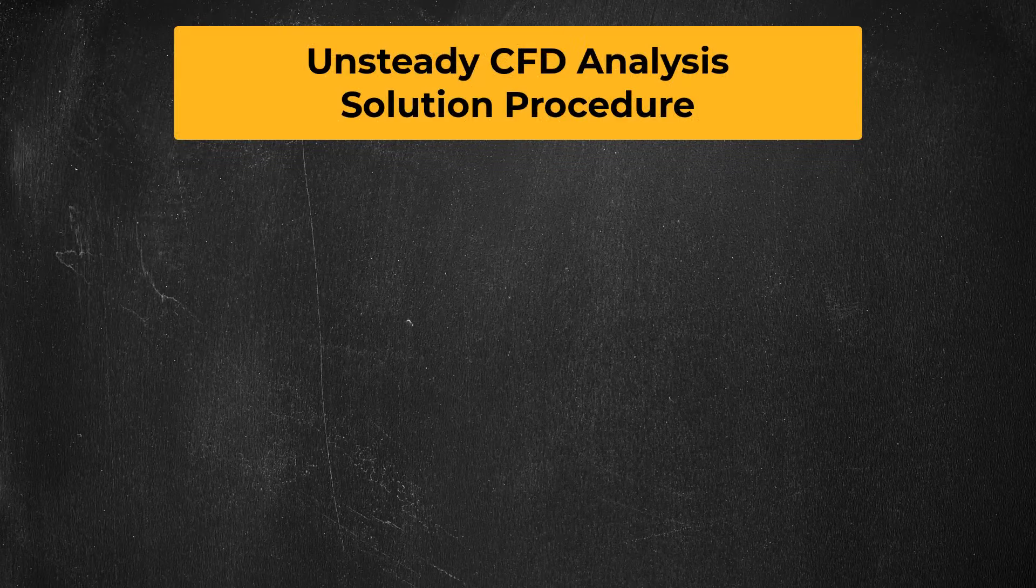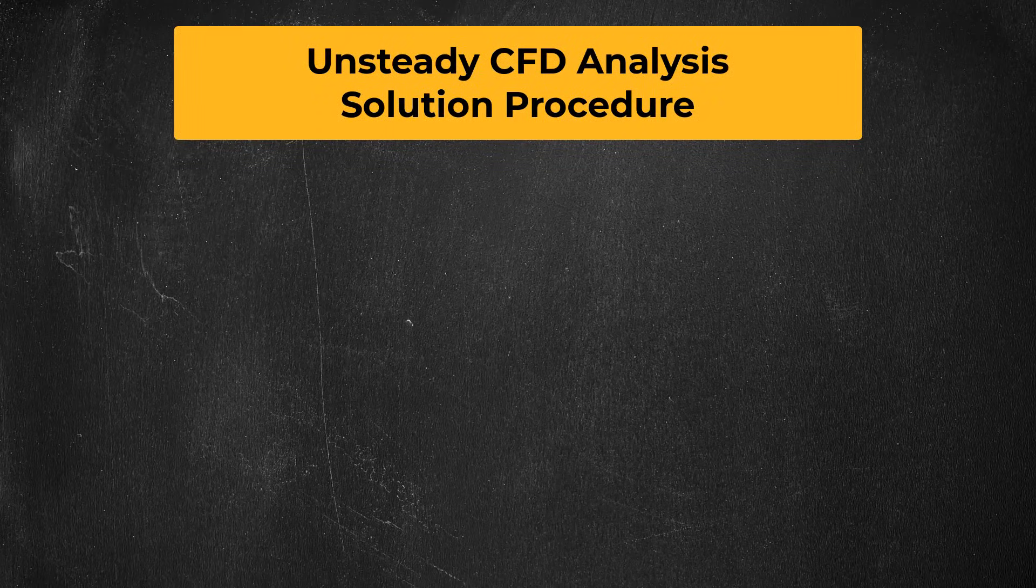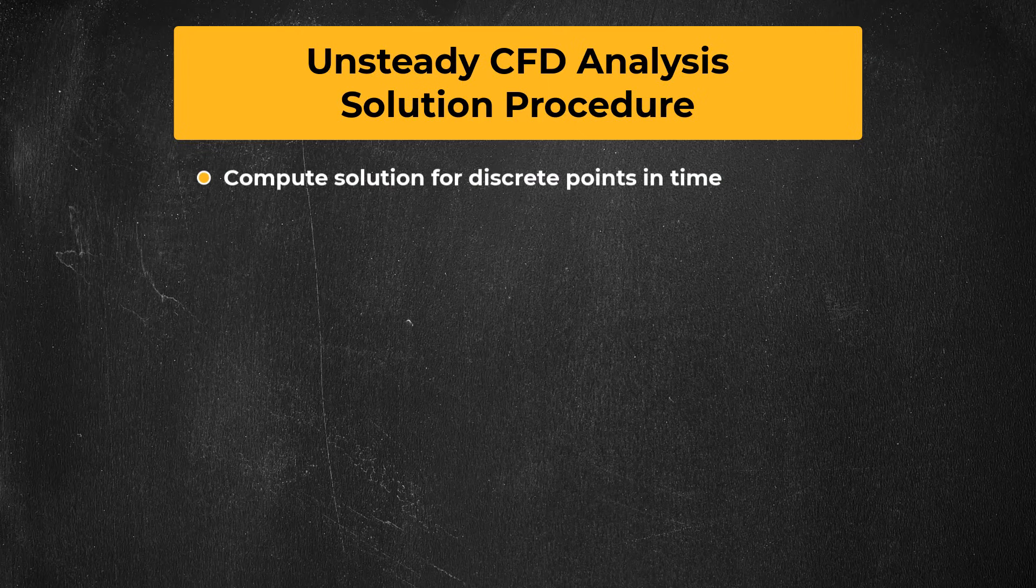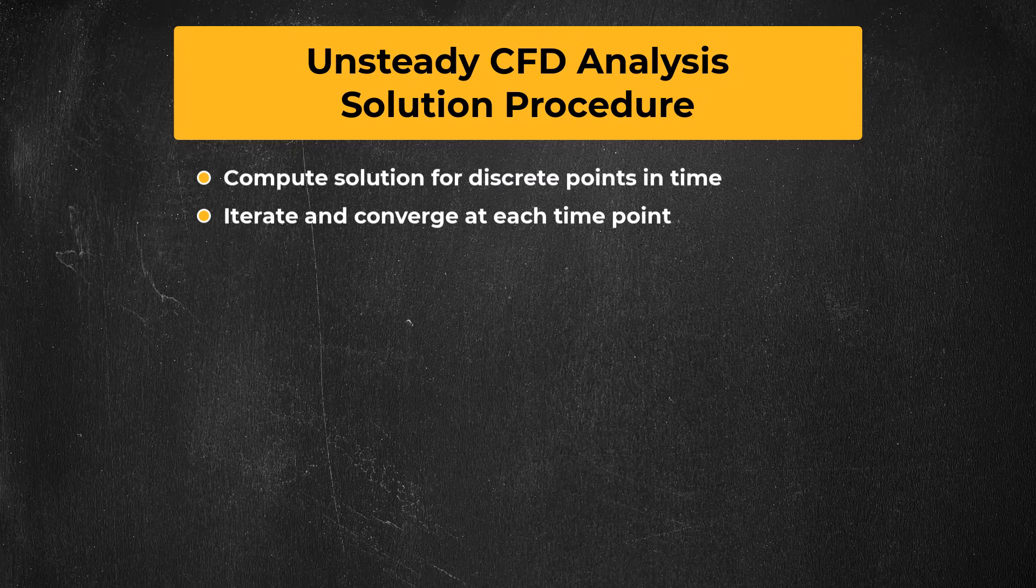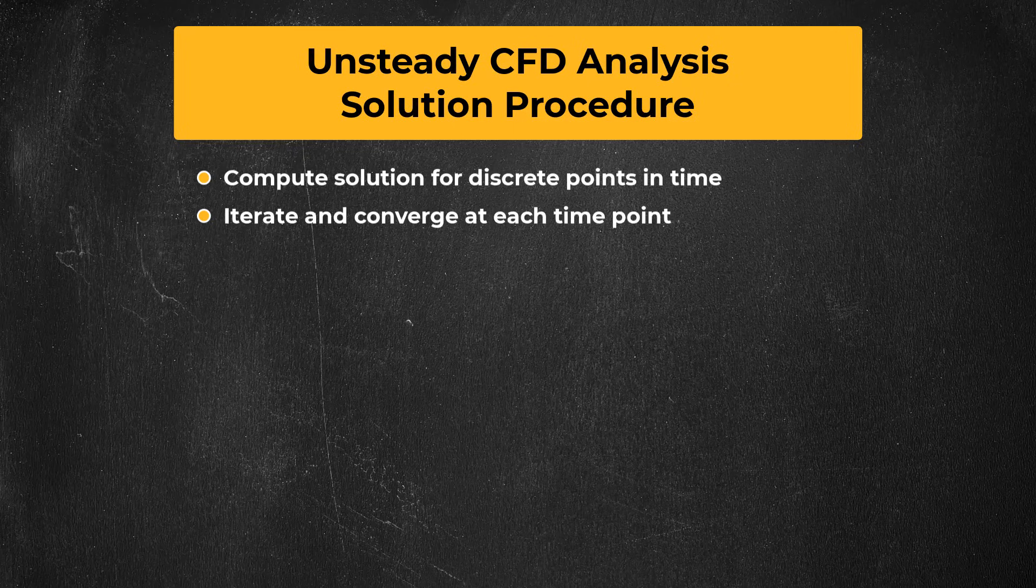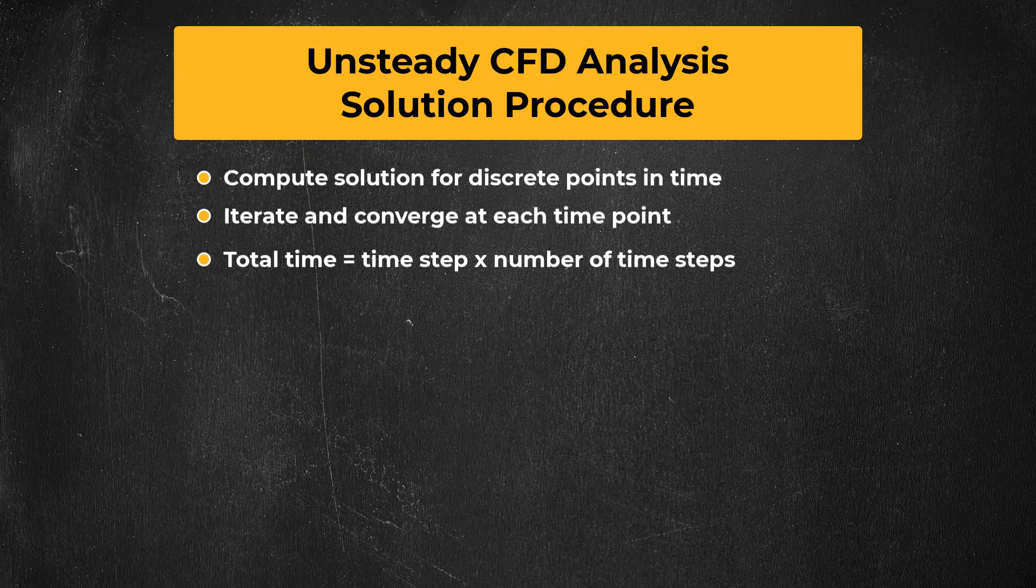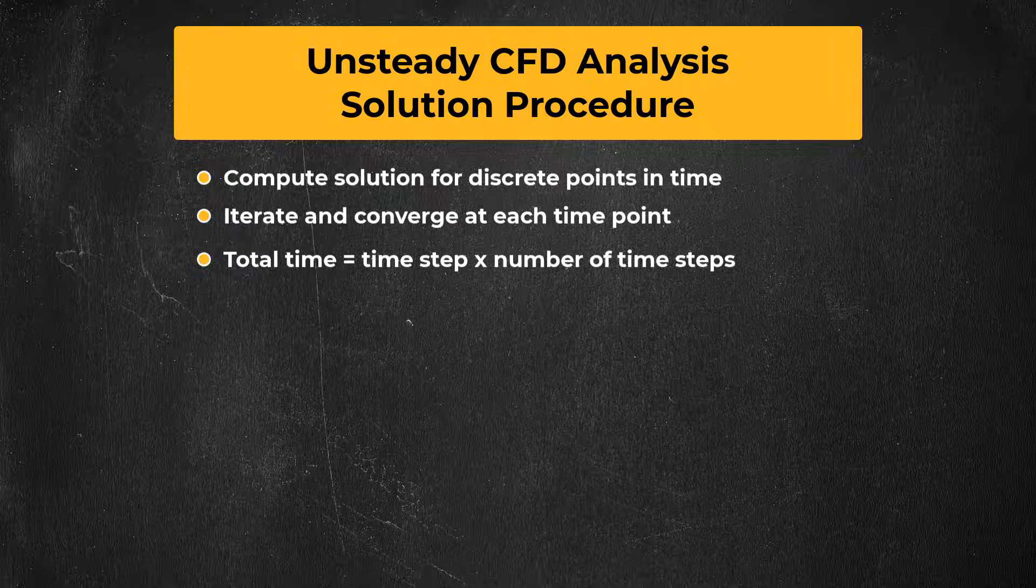The way a transient CFD simulation works is that you start with an initial condition and compute the solution at a specified number of discrete points in time. These discrete points are called time steps, and in a transient calculation, you have to iterate to the solution at every discrete point in time. You have to tell Fluent how long the time step size should be, and then the total time simulated is just the time step size multiplied by the number of time steps. The example here can help with understanding this. It is a simulation of a tank that is being filled with a liquid. You can see at different points in time how the liquid is entering from the pipe and sloshing against the walls.